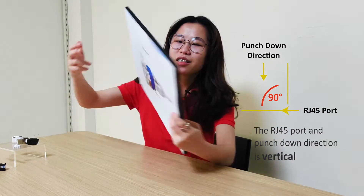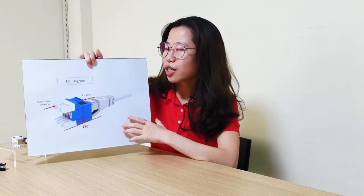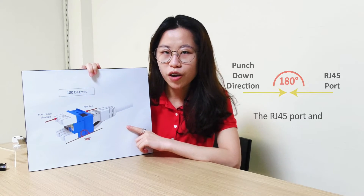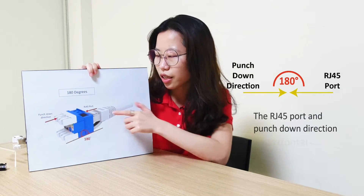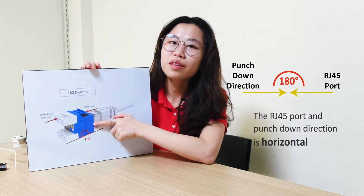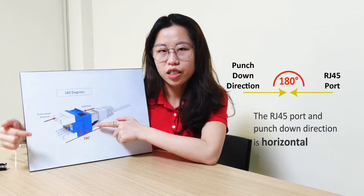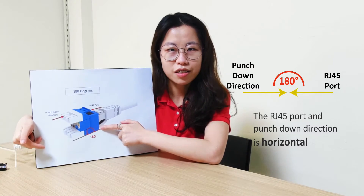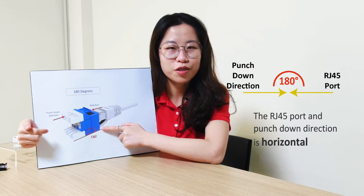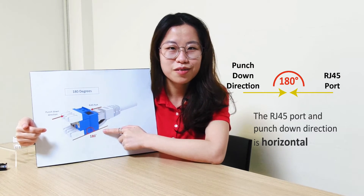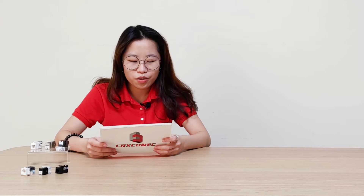Then, this one is 180-degree. The RJ45 port is like this, and the punch-down direction will be like this — it's horizontal.